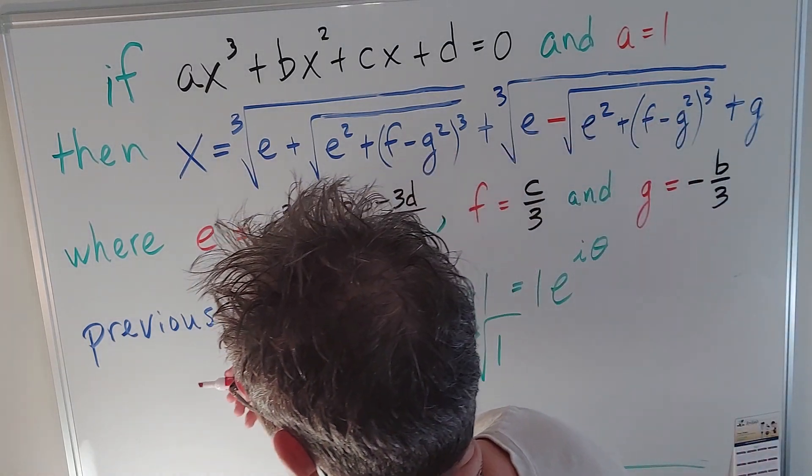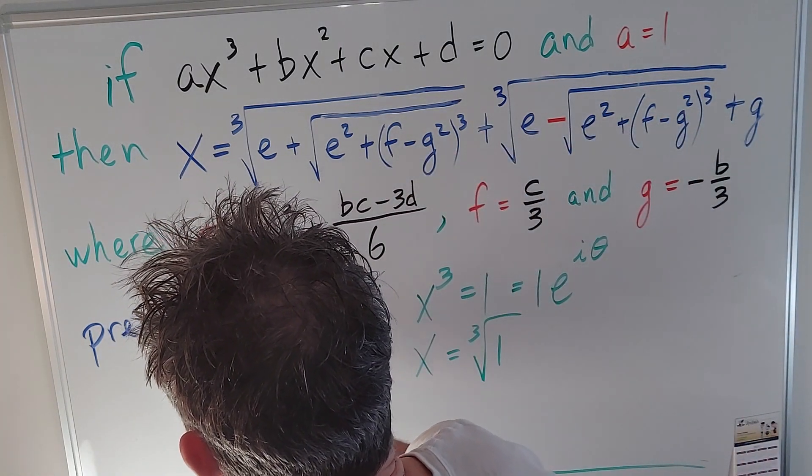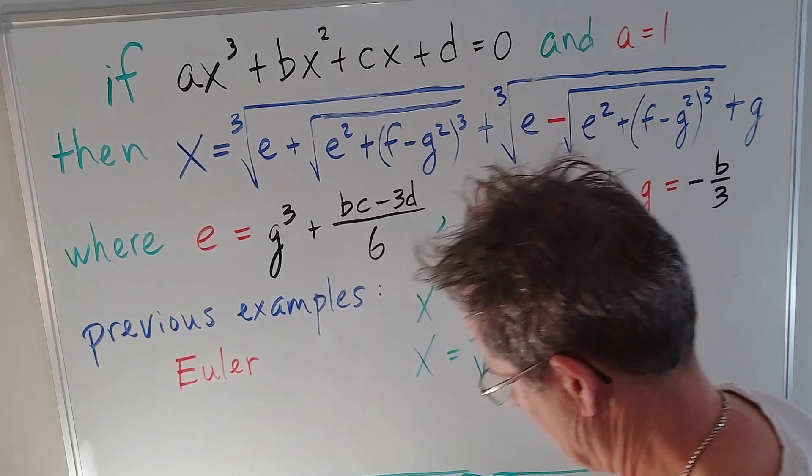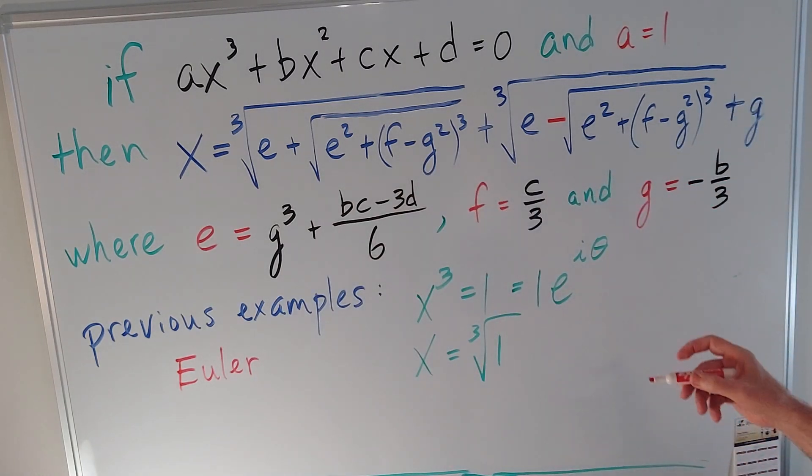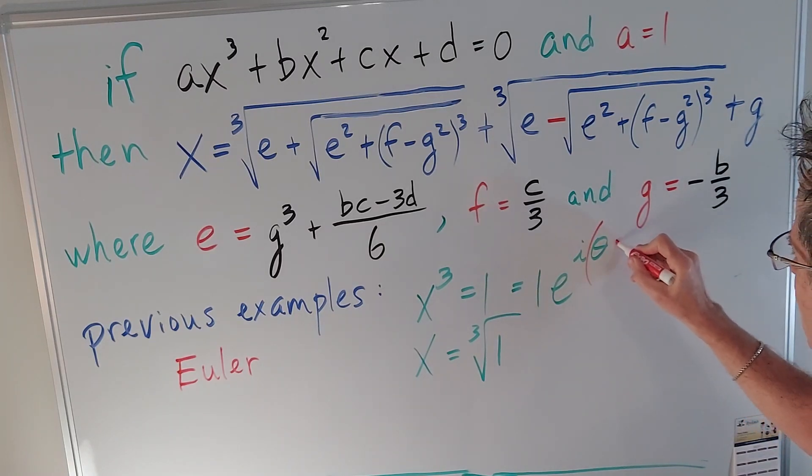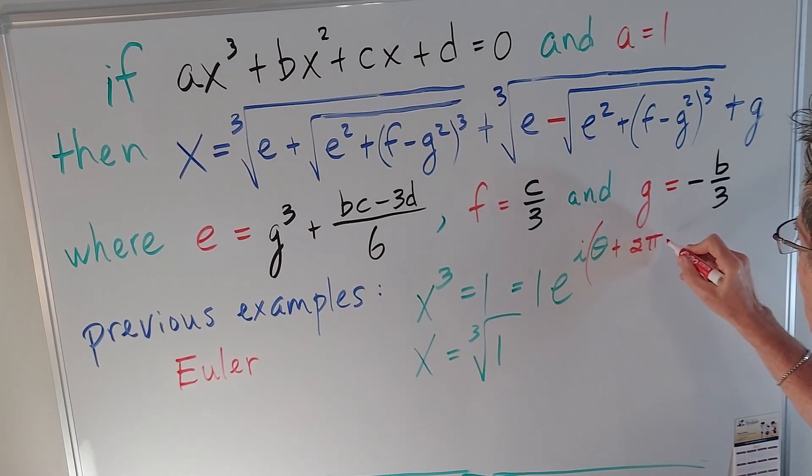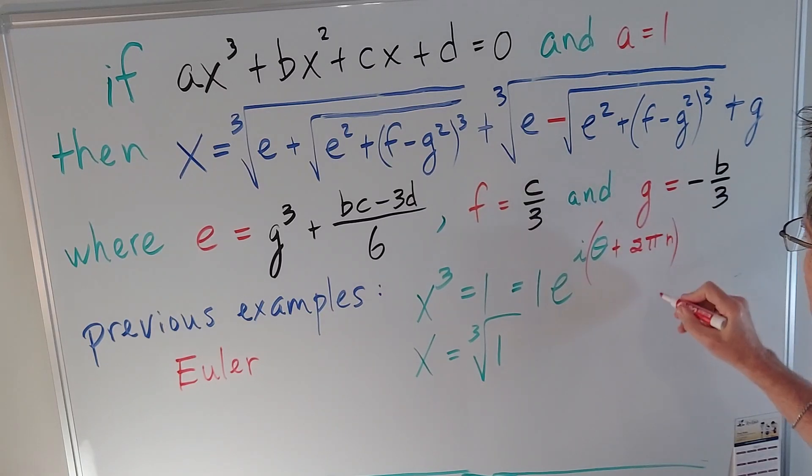And there's going to be a particular θ that works but you can also add any number of 2π radians to that because you can go around as many times as you want in either direction and you'll still get the same angle.